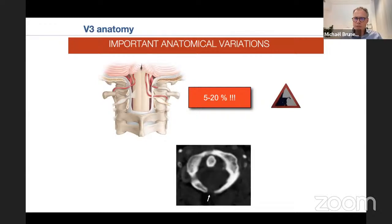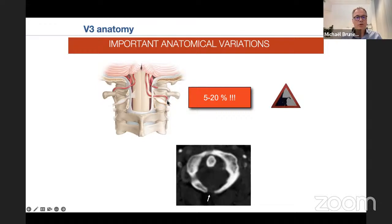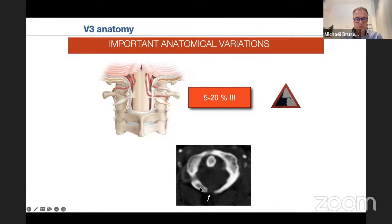Important anatomical variations that must also be known are variations of the PICA. The PICA usually arises from the intradural segment V4, but in 5 to 20% of cases the PICA may arise from the horizontal or vertical portion of the vertebral artery at the V3 level. This means that even during the initial step of the procedure, the PICA can be at risk. Also be aware that the posterior arch cannot be completely closed in some circumstances.